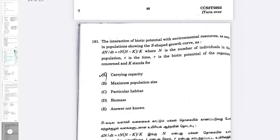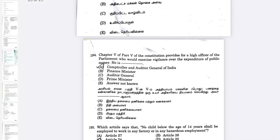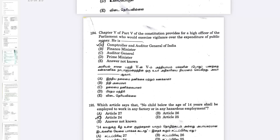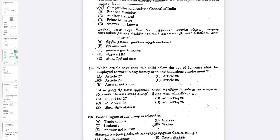Carrying Capacity. Comptroller and Auditor General. Article 24: No child below the age of 14 years shall be employed to work in any factory — Article 24.